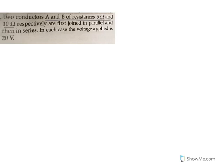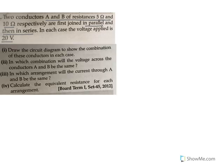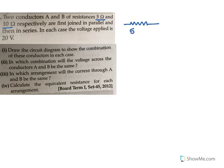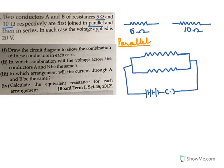Two conductors A and B of resistance 5 ohms and 10 ohms respectively are first joined in parallel and then in series; in each case the voltage applied is 20 volts. We will draw the circuit diagram for the parallel combination. In parallel, we have 5 ohms and 10 ohms connected to a 20 volt battery. The circuit diagram for the parallel connection is now drawn.